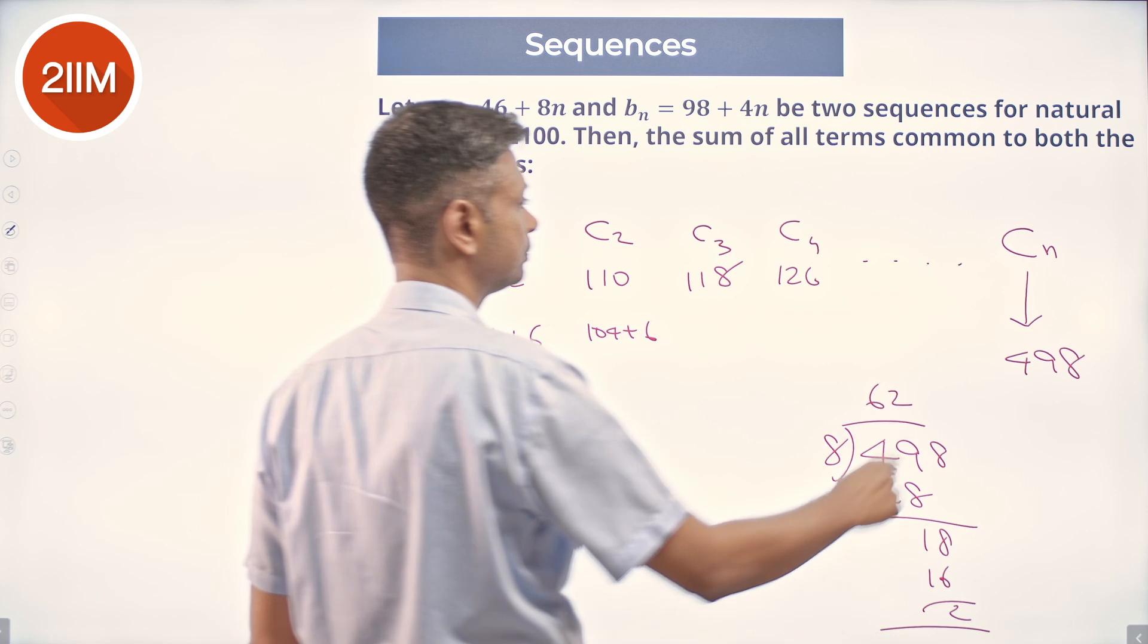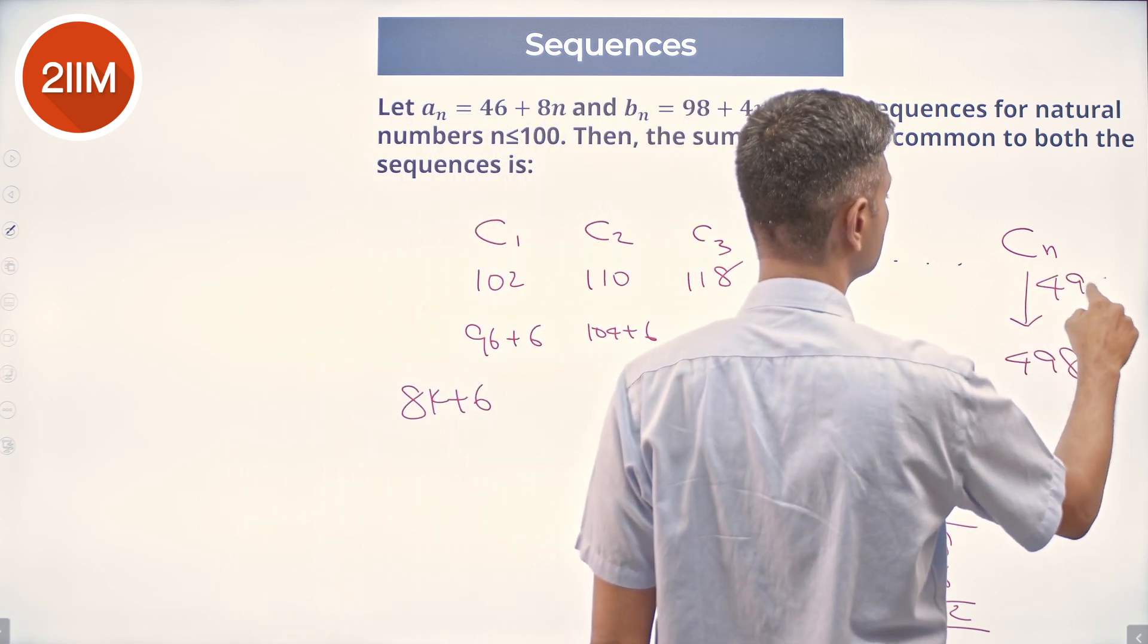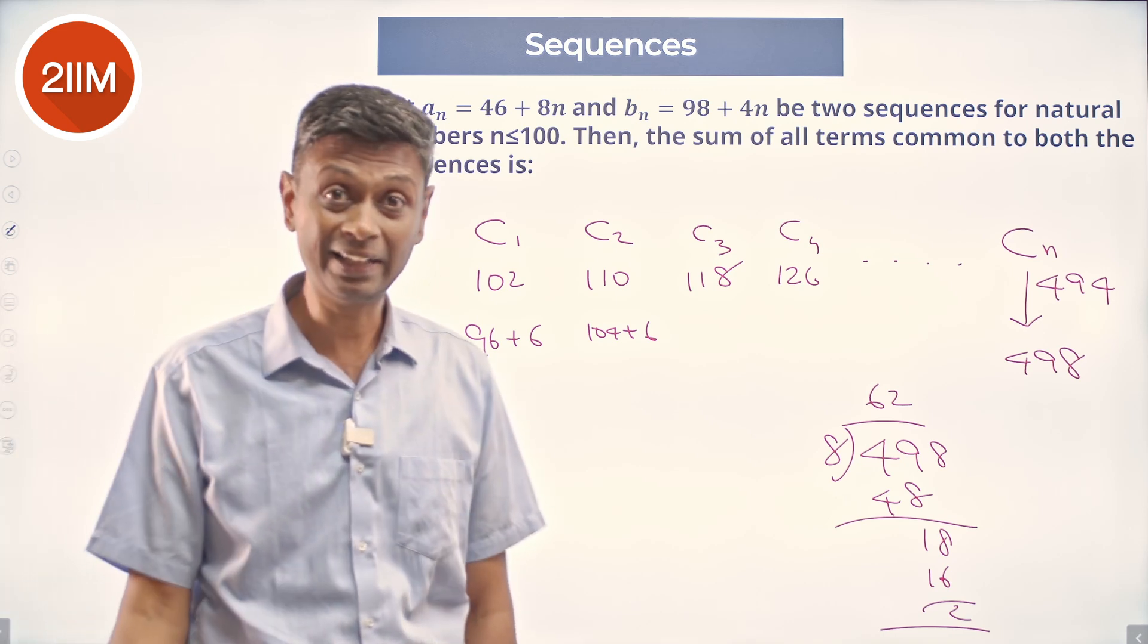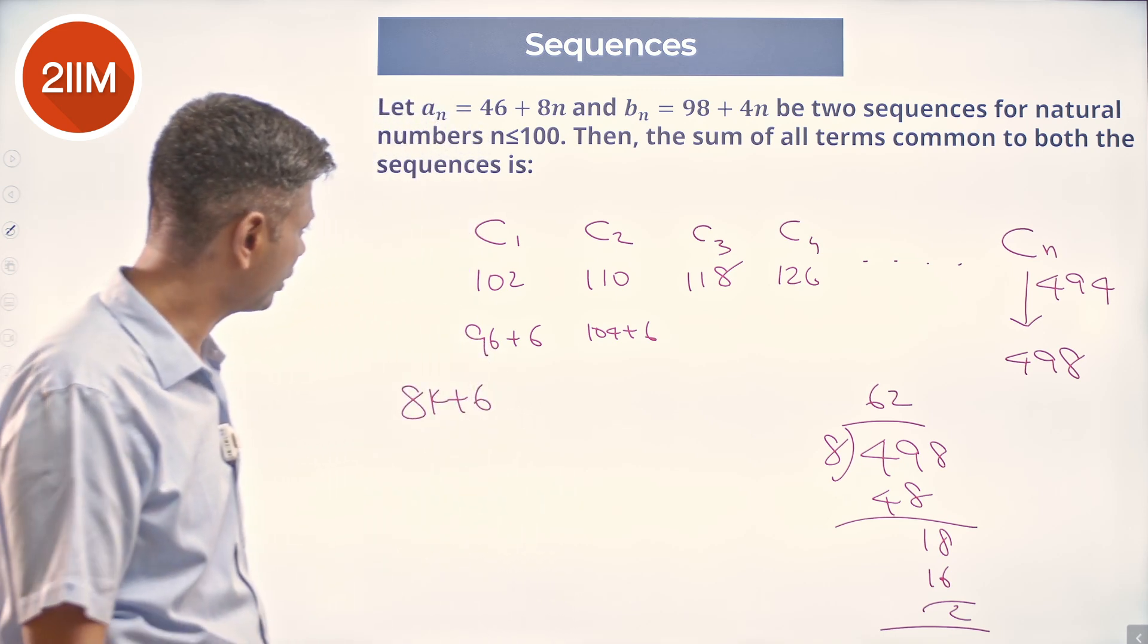494 will be one term before. So b_100 is not a part, b_99 is a part. So 494 is there.